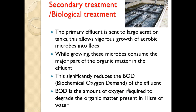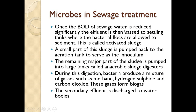Once the BOD of the sewage water is reduced significantly — the organic matter is digested by the aerobic microbes — the effluent from the aeration tank is then passed to a settling tank, where the bacterial flocs are allowed to sediment. This settled material is called activated sludge.